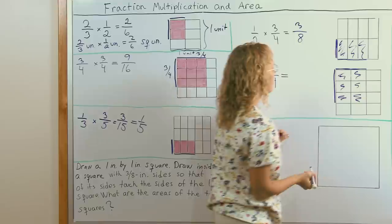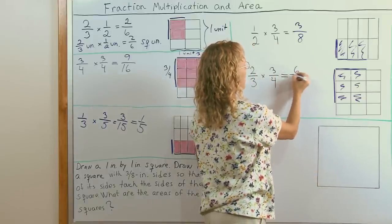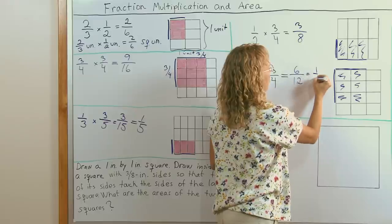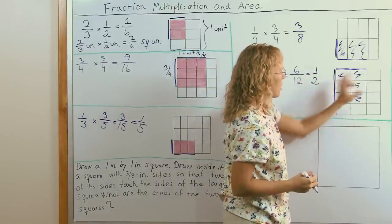All these parts are colored. And so I get six over twelve, which simplifies to one half now. One half of a square unit is colored.